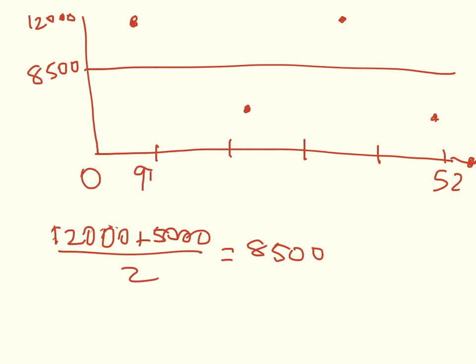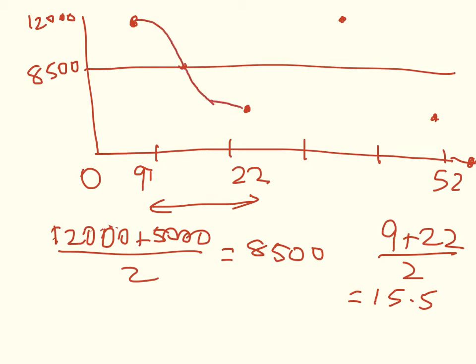Now the next useful thing to do before we start to write the equation is to figure out where's the point where it's going to cross through here. It will be halfway between 9 and 22, so 9 plus 22 over 2 is 15.5.